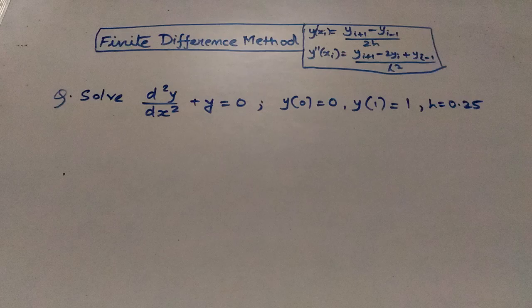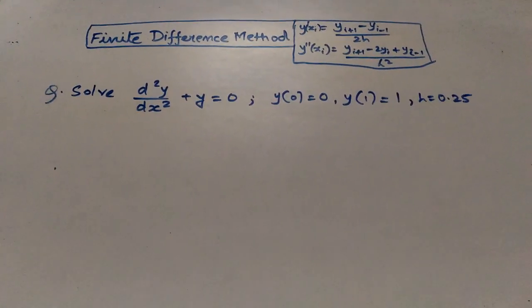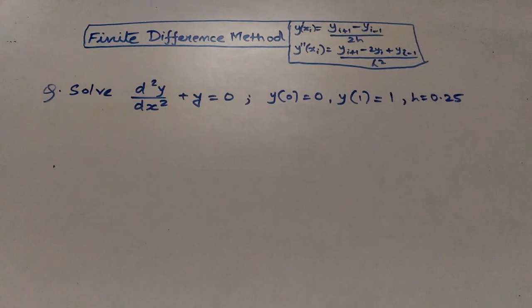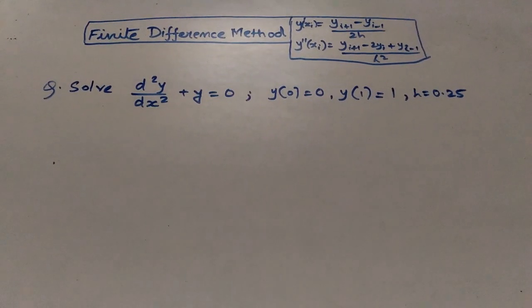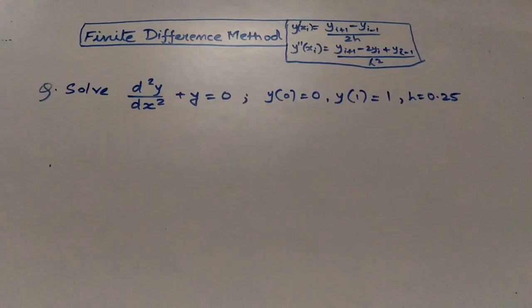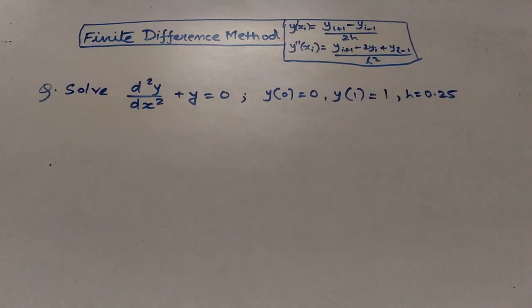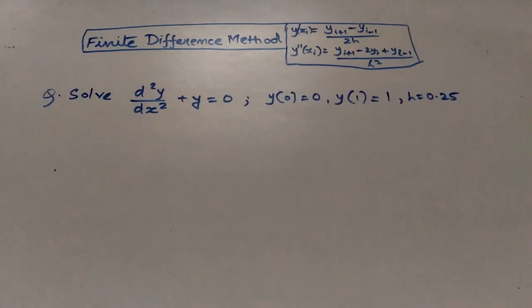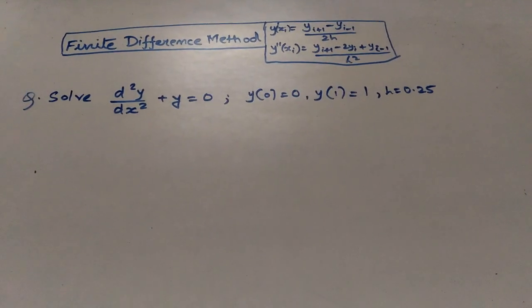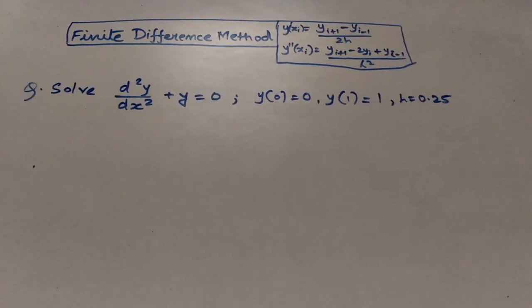Now let us look at the example to understand the finite difference method. The question is solve d²y/dx² plus y equals 0. Our boundary conditions are y equals 0 when x equals 0, and y equals 1 when x equals 1, and the value of h has been given, that is 0.25.